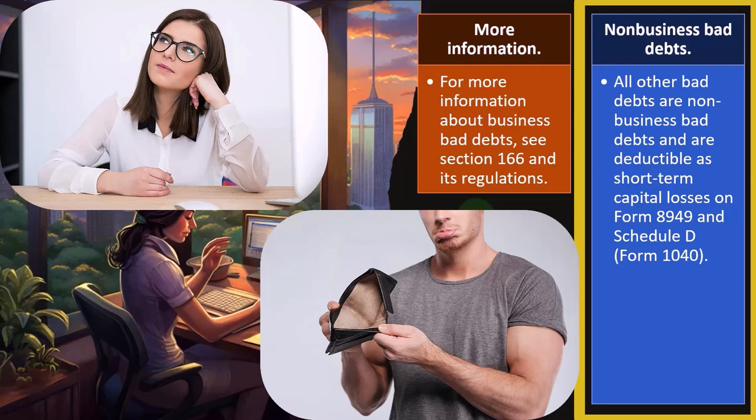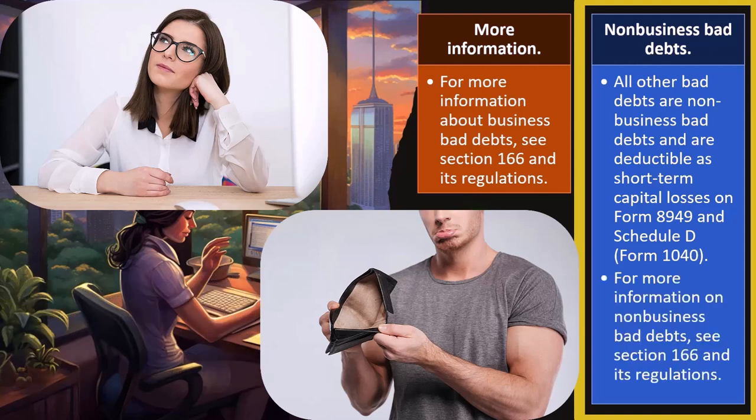From our standpoint, our major obstacle is to make sure we can separate what is a business versus personal bad debt, which can be a little bit confusing sometimes, but usually it's fairly clear with bad debts — the people that owe us money. For more information on non-business bad debts, you can see Section 166 and its regulations.